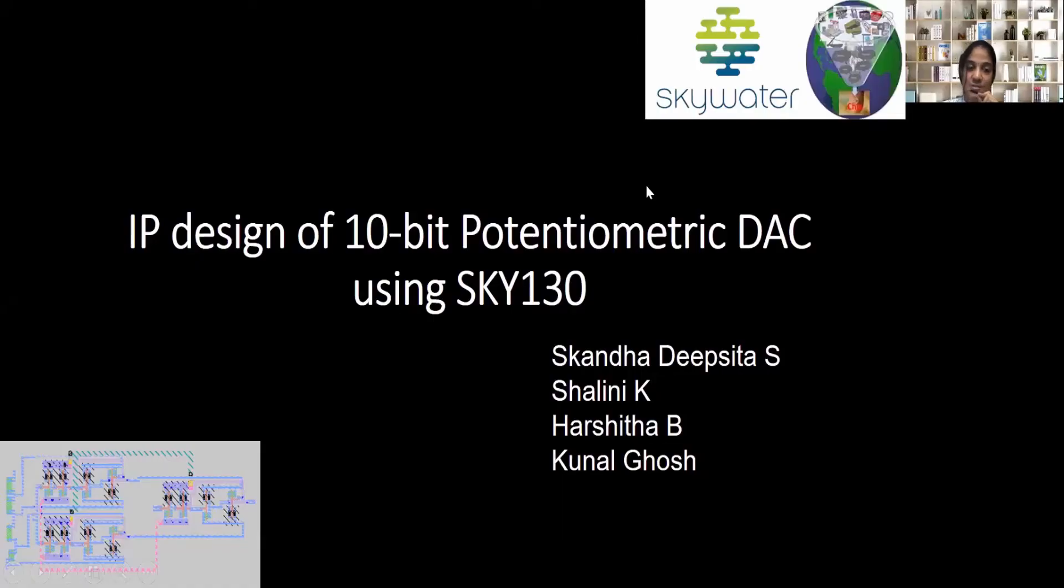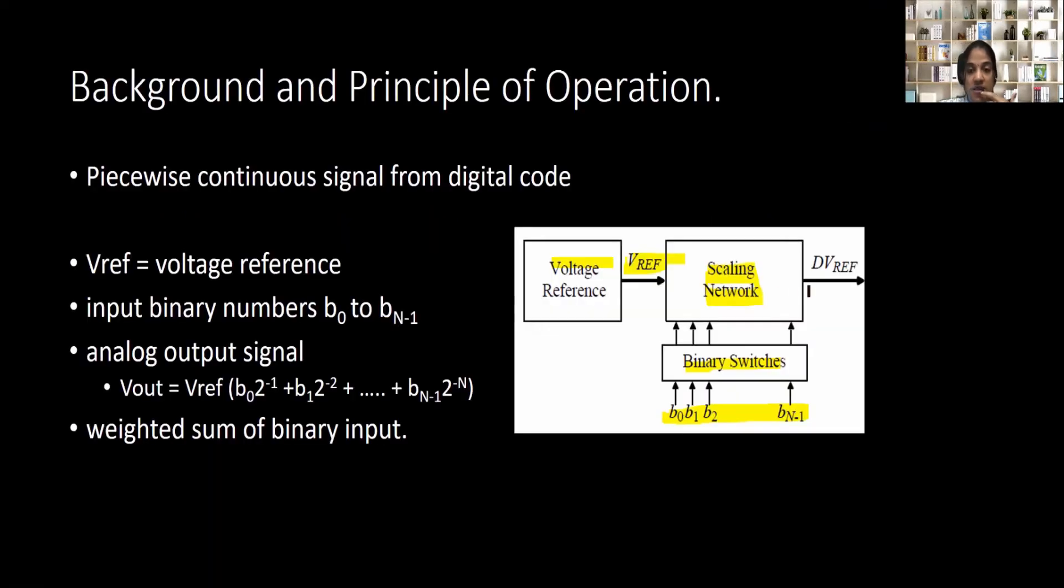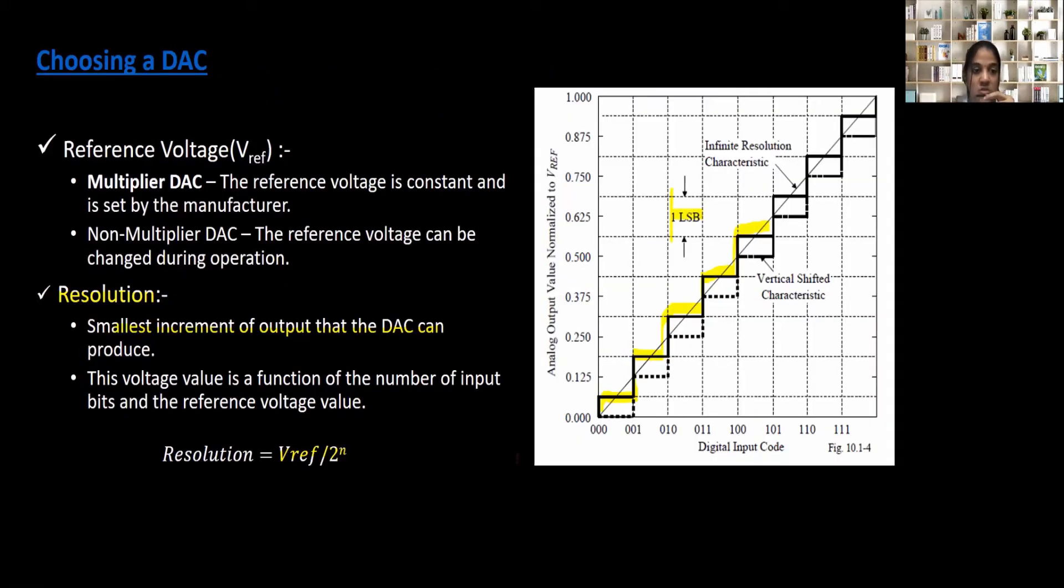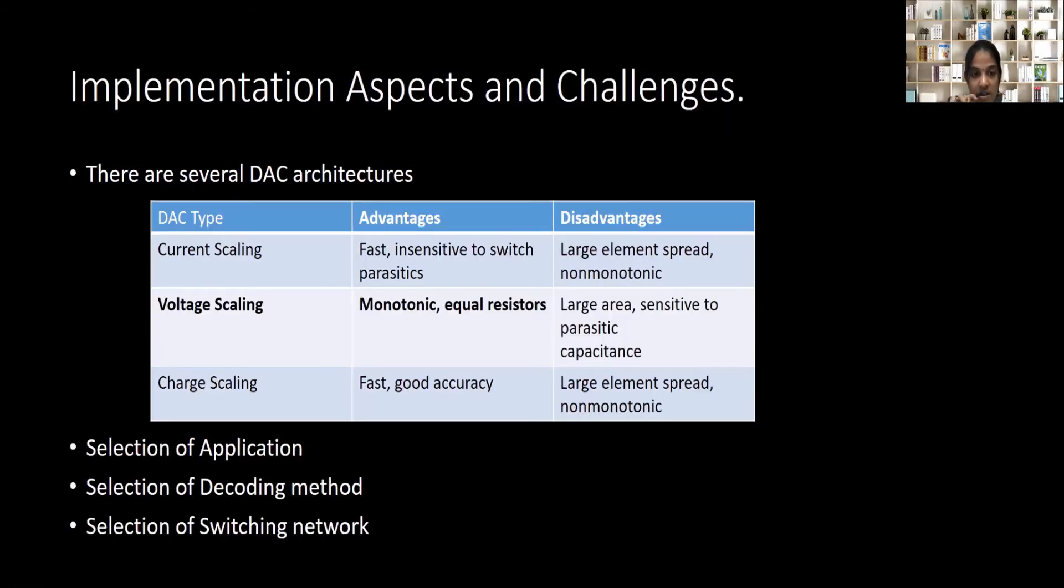Hello everyone. This webinar session is about the IP design of potentiometric DAC using Skywater 130 PDK. Why the scaling network is required is that we will be dividing the entire VREF into some voltage parts based on the input binary switches. What this actually means to us while designing the circuit is that we should be giving the proper reference voltage to get an output that is stable, that has a proper settling time and that also has a proper output step response.